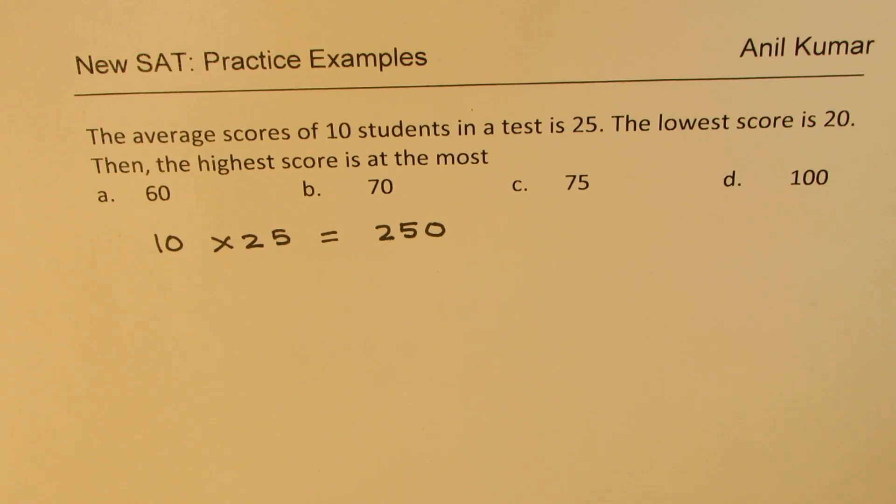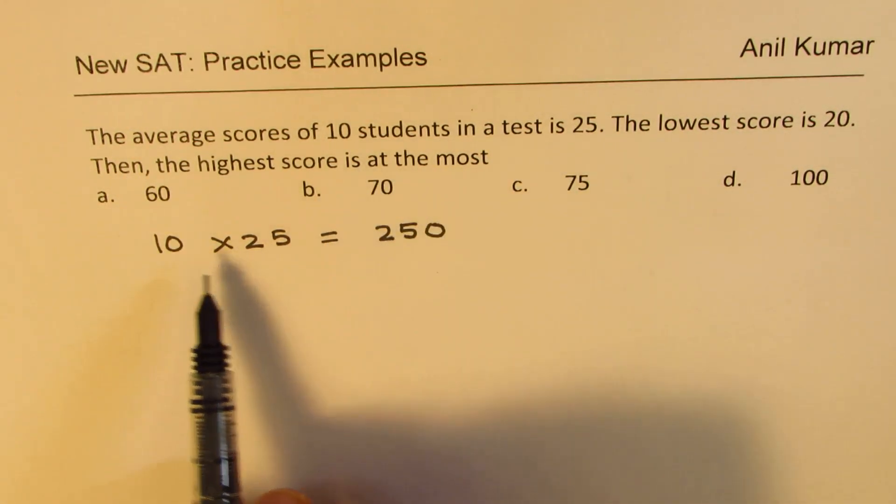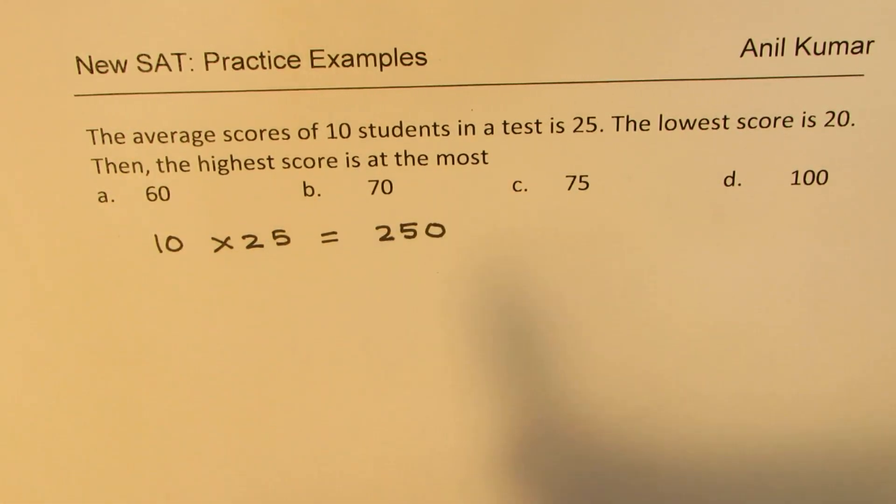The average scores of 10 students in a test is 25. So as soon as you read this sentence, 10 times 25 equals 250 should get into your mind. So this is what happens while you're reading.